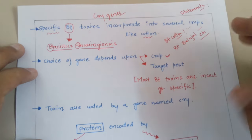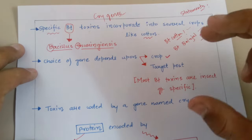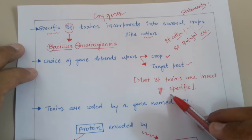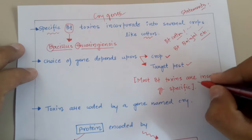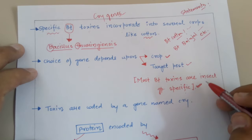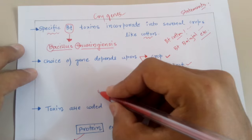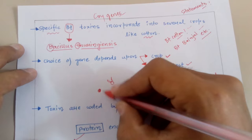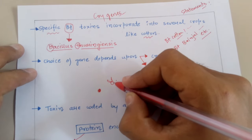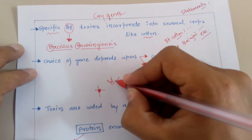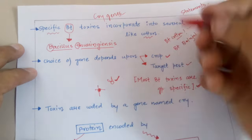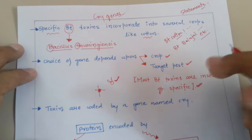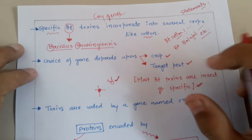The choice of BT toxins depends upon two things: one is the crop itself — what kind of BT toxin suits a particular crop — and the second is the target pest. Most of the BT toxins are insect group specific. So you have to use a BT toxin that kills one particular pest and not another. The choice of gene depends on the crop and the target pest we want to kill.